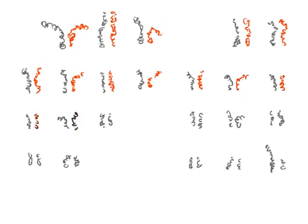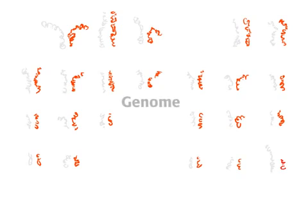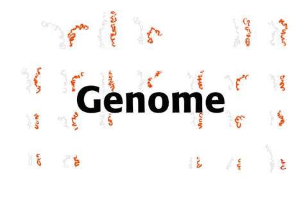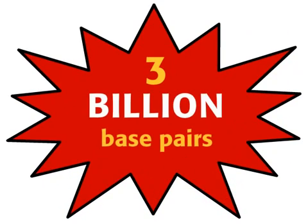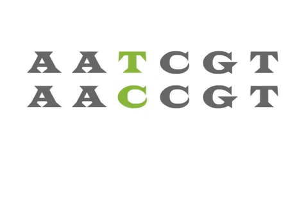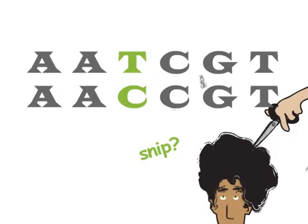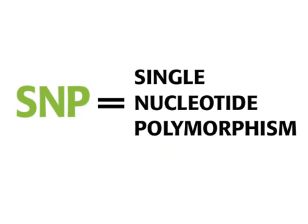An entire set of 23 human chromosomes is called a genome. The human genome is composed of three billion base pairs. Variation at a single base pair is called a SNP, or single nucleotide polymorphism.